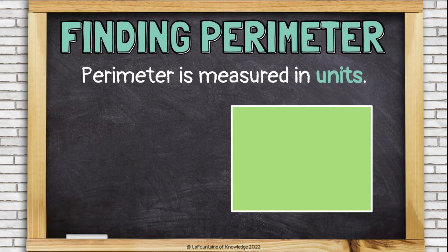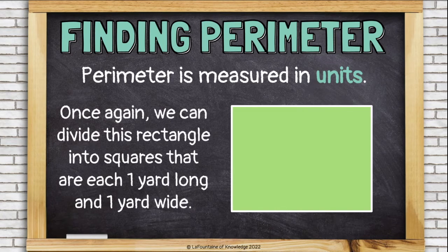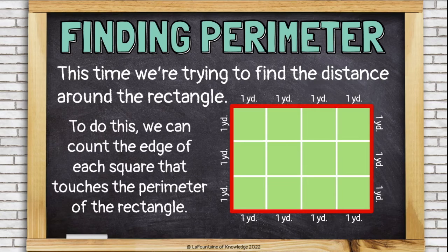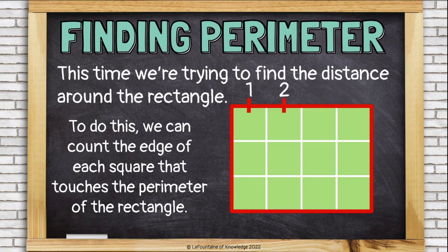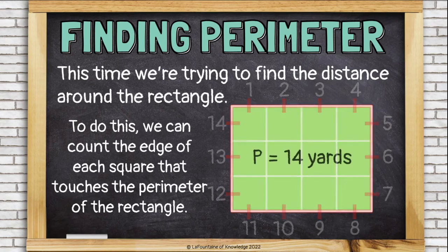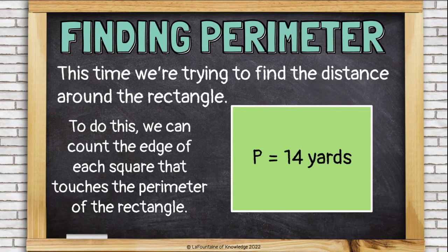Perimeter is measured in units, not square units. We can divide this rectangle into squares — this time, they're each one yard long and one yard wide. We're trying to find the distance around the rectangle. To do this, we count the edge of each square that touches the perimeter of the rectangle: 1, 2, 3, 4, 5, 6, 7, 8, 9, 10, 11, 12, 13, 14. This rectangle has a perimeter of 14 yards.